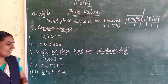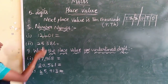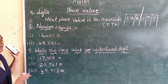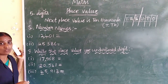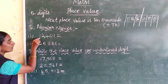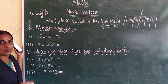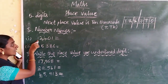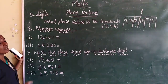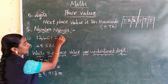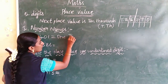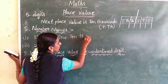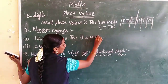Now we go to write the number names. First, say which is the highest placement. The highest placement is 10,000. So how many 10,000s? One — 10,000.